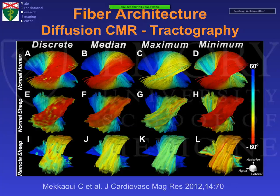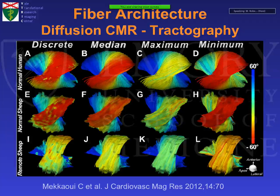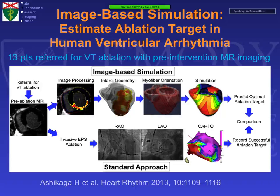Other groups have shown similar changes in fiber architecture — the fiber course changes in a normal heart, but in the remote myocardium of a sheep following myocardial infarction, there is alteration in fiber architecture in the infarct and also in remote areas, related to the heart becoming more globular. This kind of imaging looking at scar and fiber architecture can model electrical activation, as validated by the Hopkins group with invasive measures — with implications for EP evaluations and therapeutic interventions.